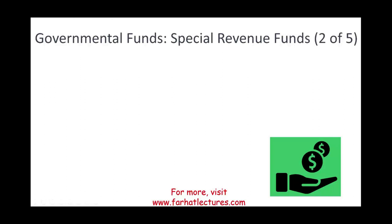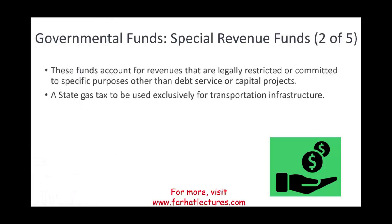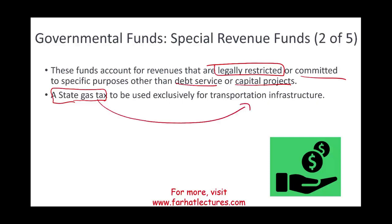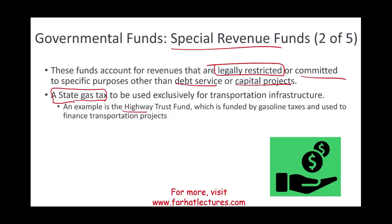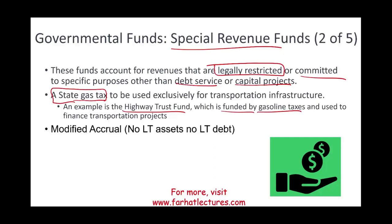The second type of governmental fund is the special revenue fund, and we can have many of them. These are funds used specifically for a legally restricted or committed purpose — other than debt service or capital projects. An example is a state gas tax: when you fill your car with gasoline, you pay a specific tax that is specifically used for transportation infrastructure or maintaining highways, placed in a special revenue fund.